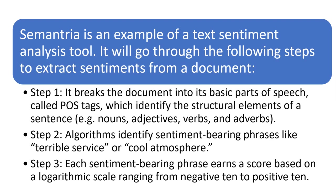To extract sentiments from a document, we follow these steps. Step one: the document is broken into basic parts of speech called POS tags — noun, adjective, verb, adverb — and we identify the structure of the sentence. Then the algorithm identifies sentiment-bearing phrases like 'terrible service', 'cool atmosphere', 'good video', 'explanation was good', or 'installation was not proper'. This is how sentiments can be analyzed.